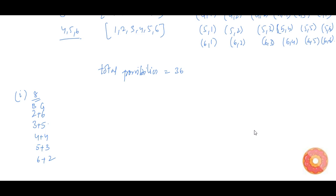Now these are the cases in which the sum can be eight. Counting them: one, two, three, four, five — there are five favorable possibilities. Therefore, the probability is equal to the number of favorable outcomes divided by total number of possibilities, which is 5/36. This is our answer for the first case.